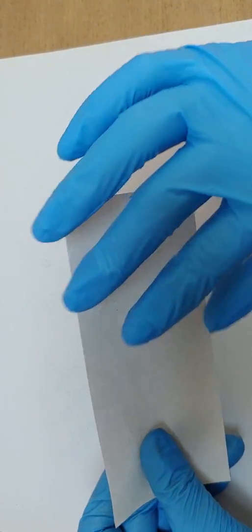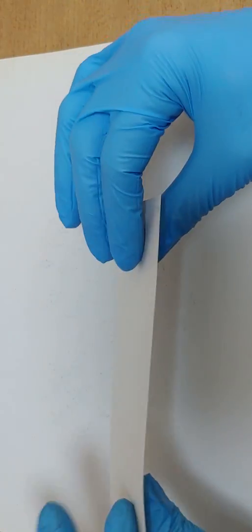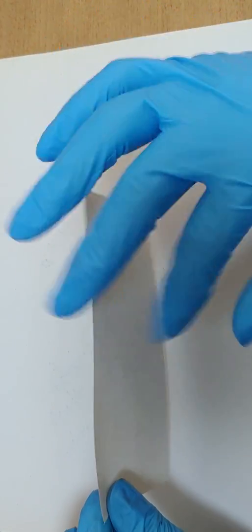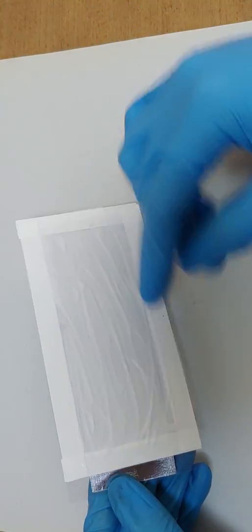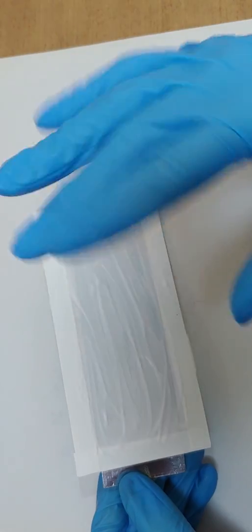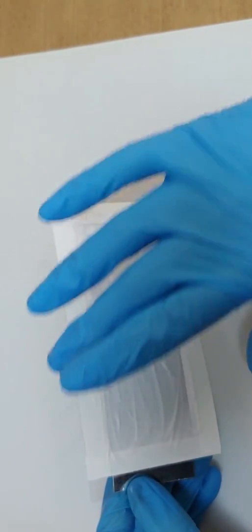First, we don't have to use paper because it becomes another resistance in the battery. Ceramic plays a role as a separator, so we don't need to use paper.